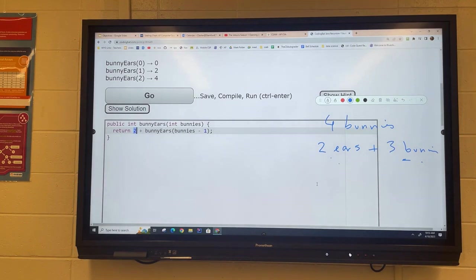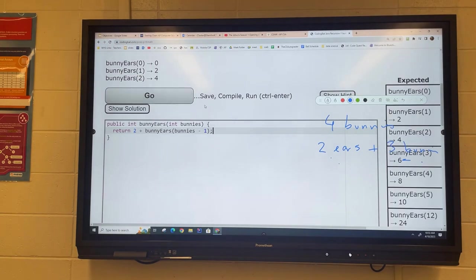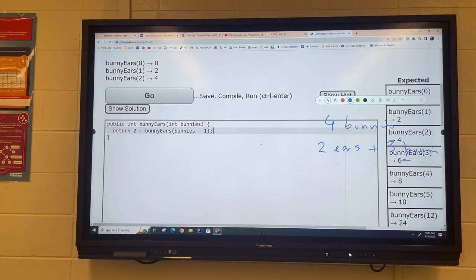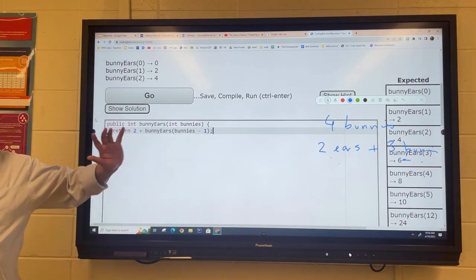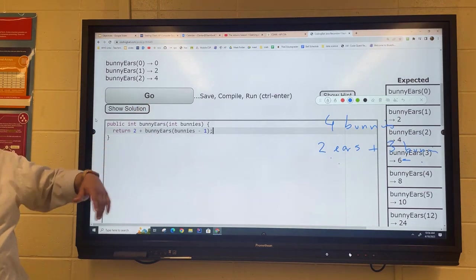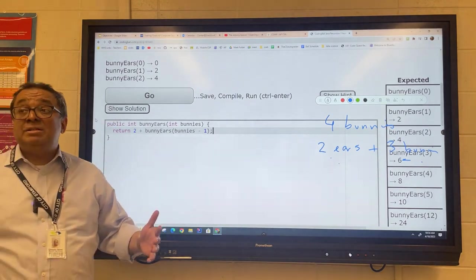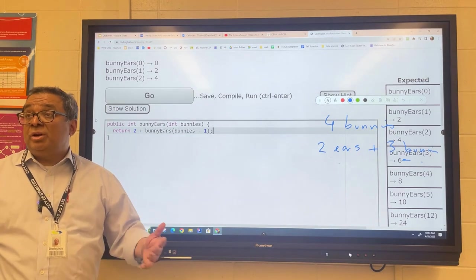Go ahead and run this, and you'll see this won't work right now. You can see that we're going to get this error called stack overflow. And when you're first learning a recursion, you're going to get this error a lot. And basically, what this means is that you have infinite recursion. And the reason you have infinite recursion is that you have not followed one of the important principles of recursion, and that is that every recursive algorithm has to have at least one thing called a base case.